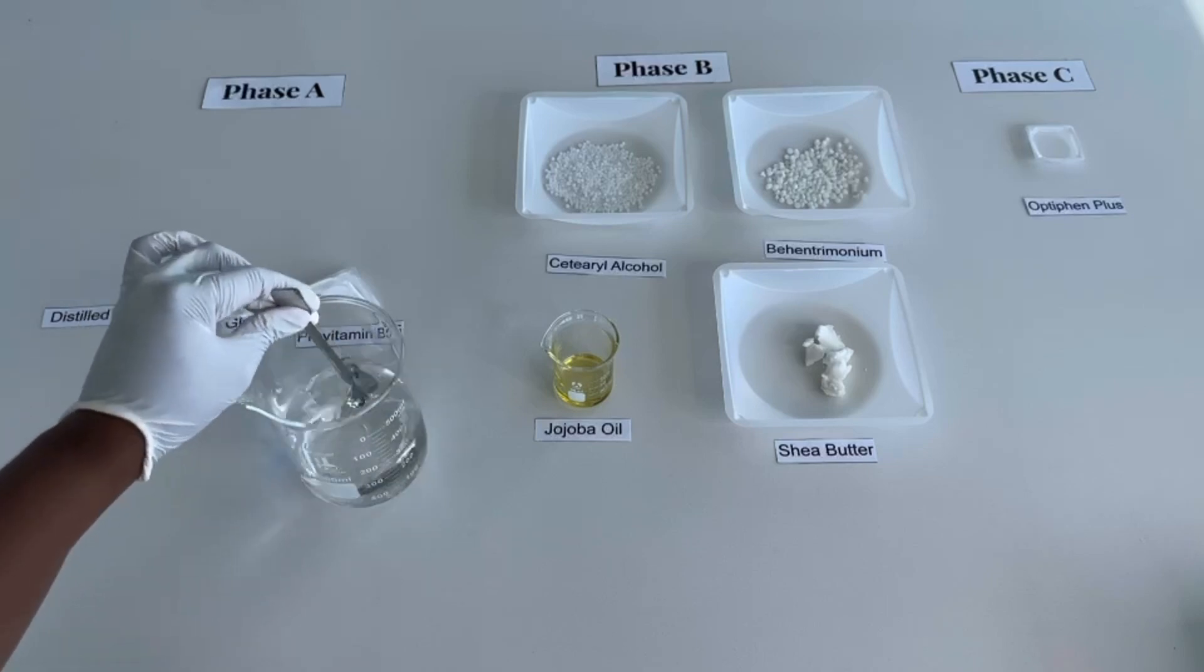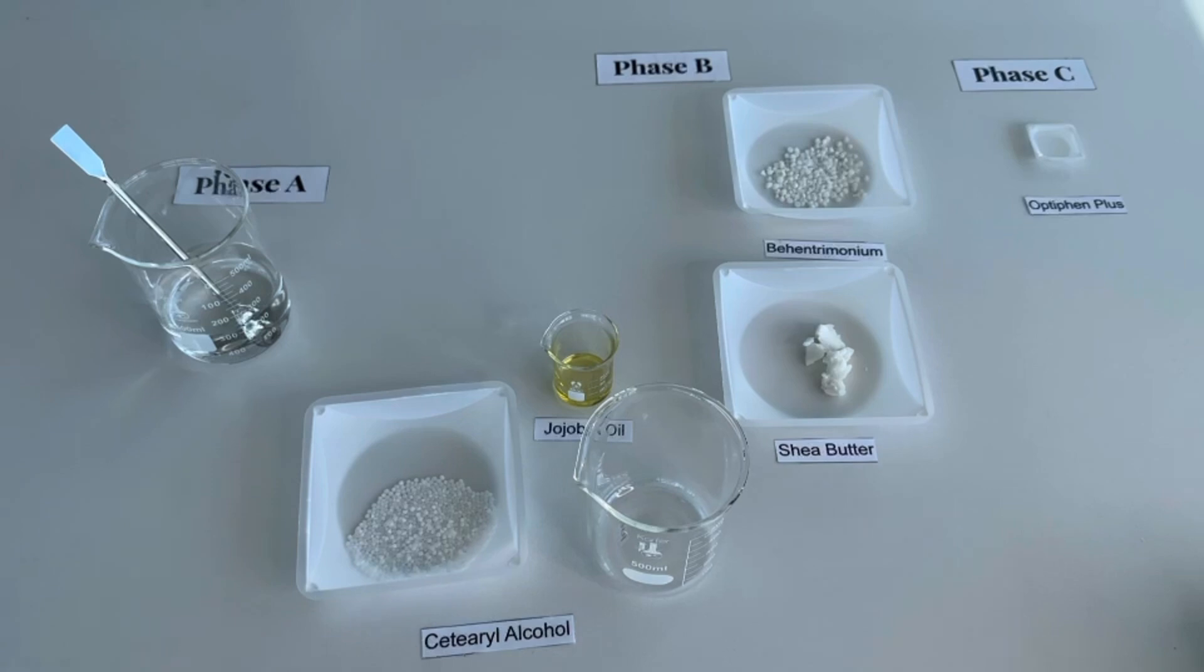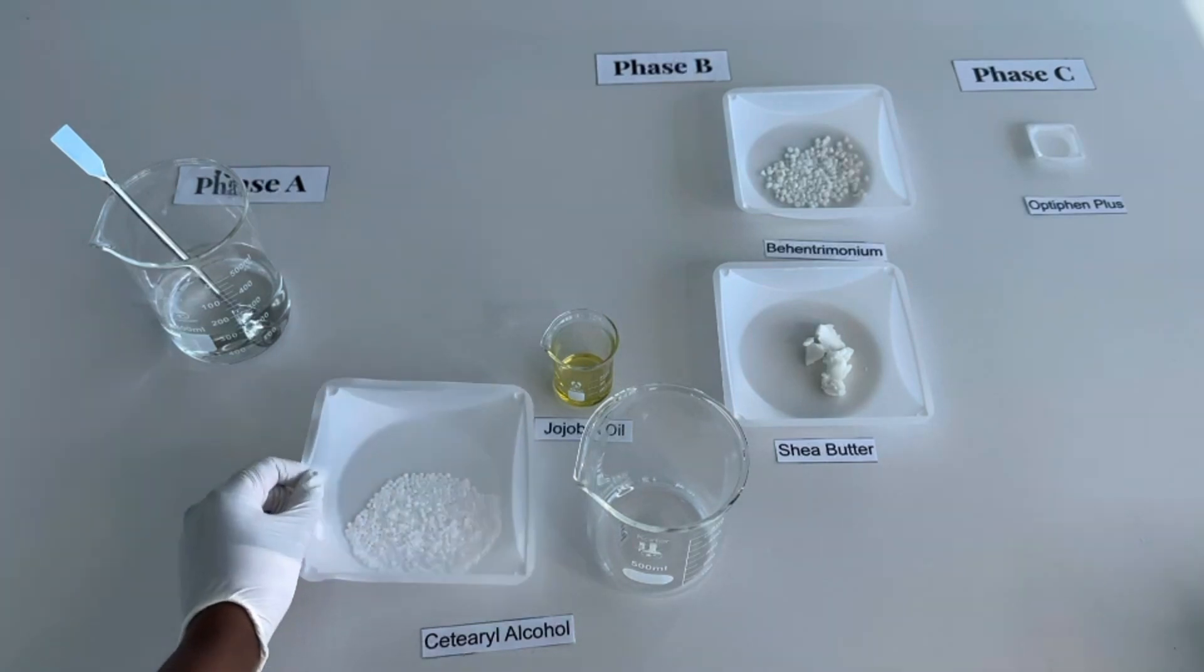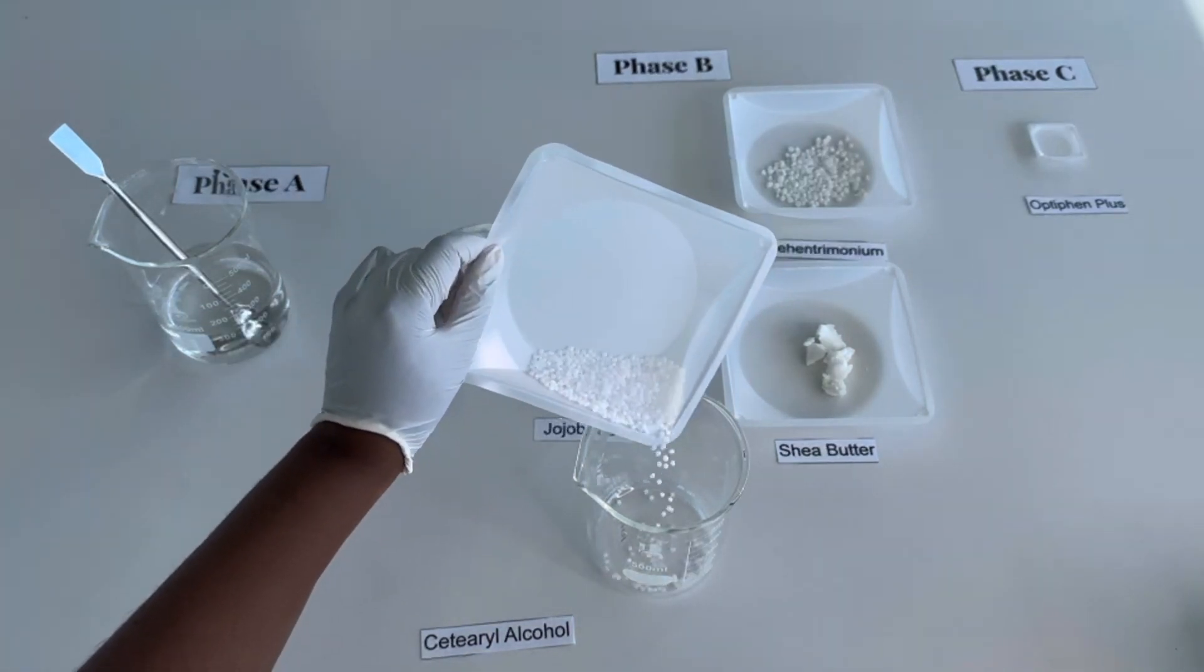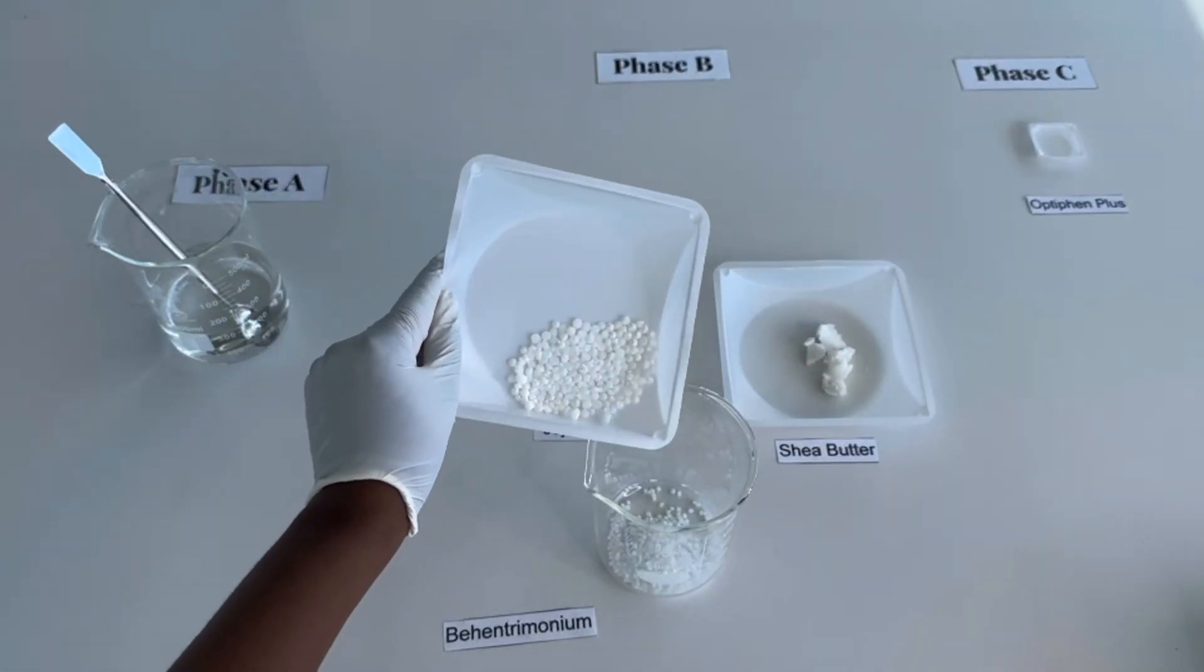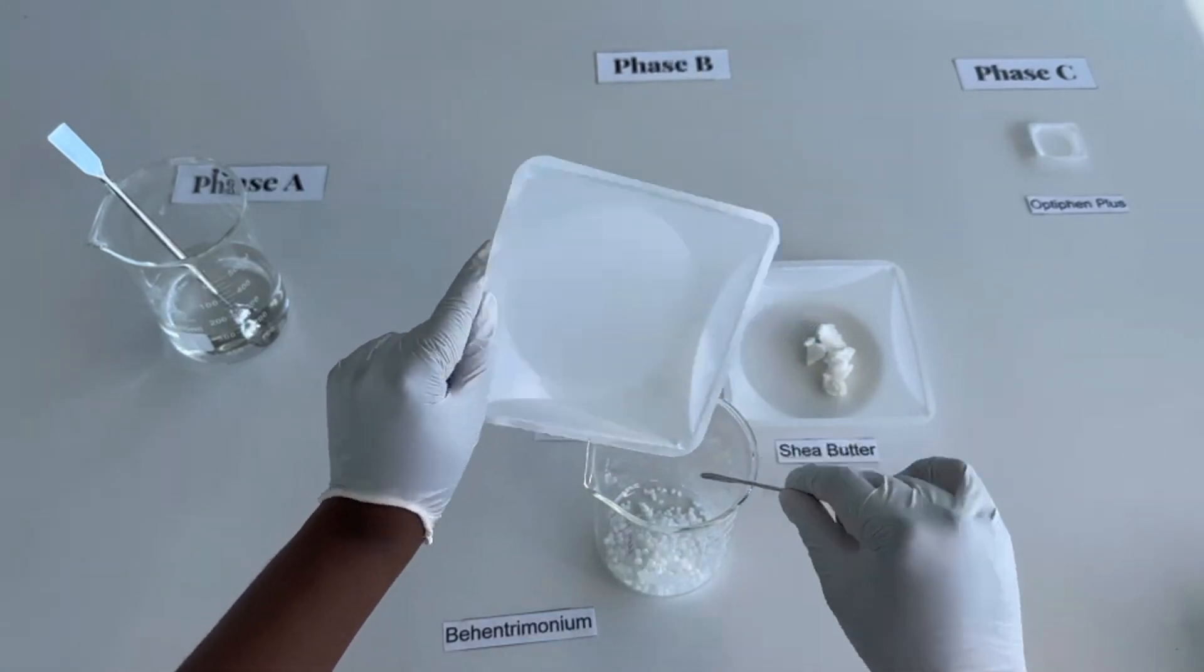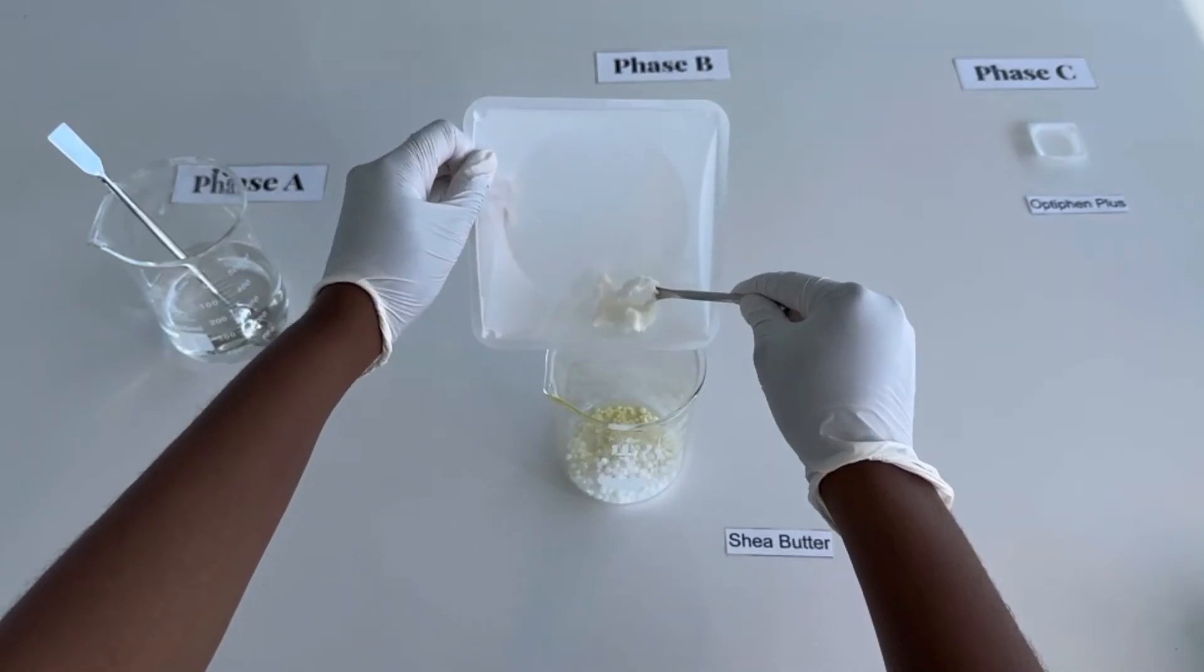Now let's work on Phase B. To a separate heat safe beaker, I'll add cetyl alcohol, which will give us a conditioning texture and help emulsify the mixture. Then I'll add in behentrimonium, which will give our conditioner the conditioning effect. Then I'll add in jojoba oil and shea butter as emollients.